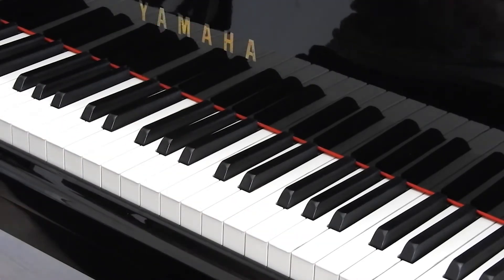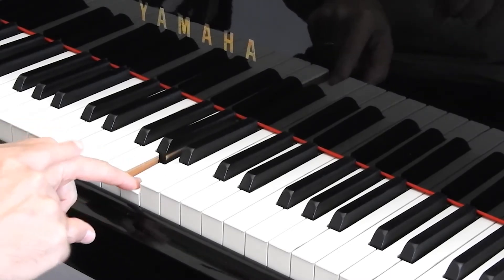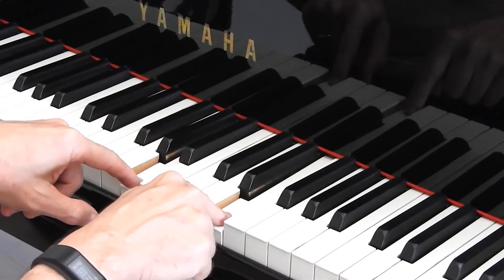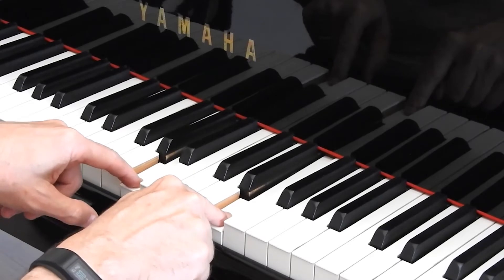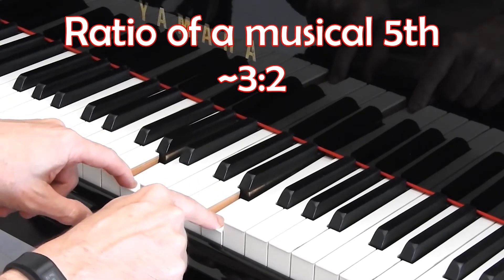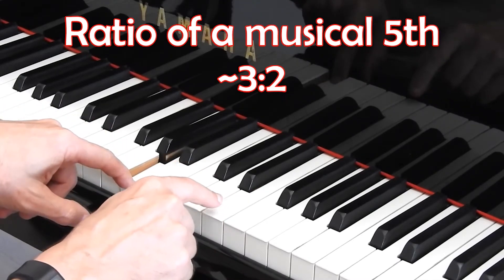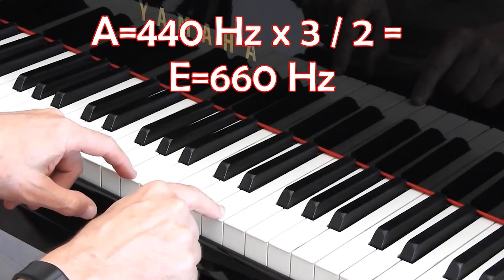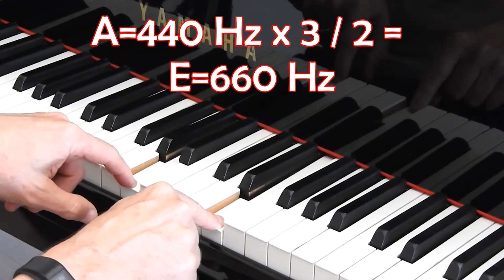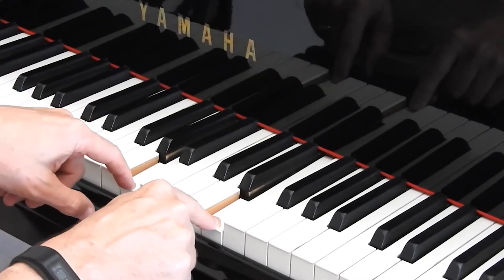Now it gets interesting when you start doing other relationships. Let's take an A and we're going to go up a fifth, one, two, three, four, five. That note is called an E. And the frequency ratio is roughly three to two. So if this is 440, this next one, this E is 660 Hertz. Hear those together? There's a mathematical relationship between the two.